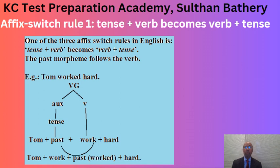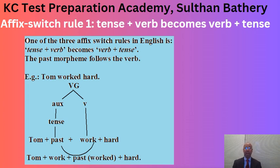See the example: Tom worked hard. The structure of the verb group is auxiliary plus main verb. The main verb is 'work'. The auxiliary is tense, and the tense is past. So the structure of the sentence is: Tom plus past plus work plus hard.